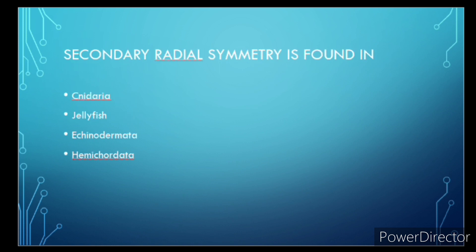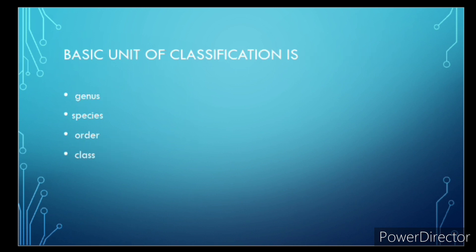Secondary radial symmetry is found in? The correct answer is Echinodermata. Basic unit of classification is? Correct answer is species.